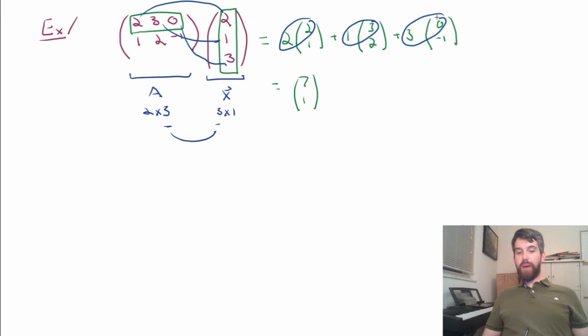So, I can do this relatively quickly in my head. I can just sort of say, look, 2 times 2, that's 4. And then I'm going to go to 3 times 1, that gives me a 7. And then 0 times 3, that doesn't add anything, I'm still at 7.